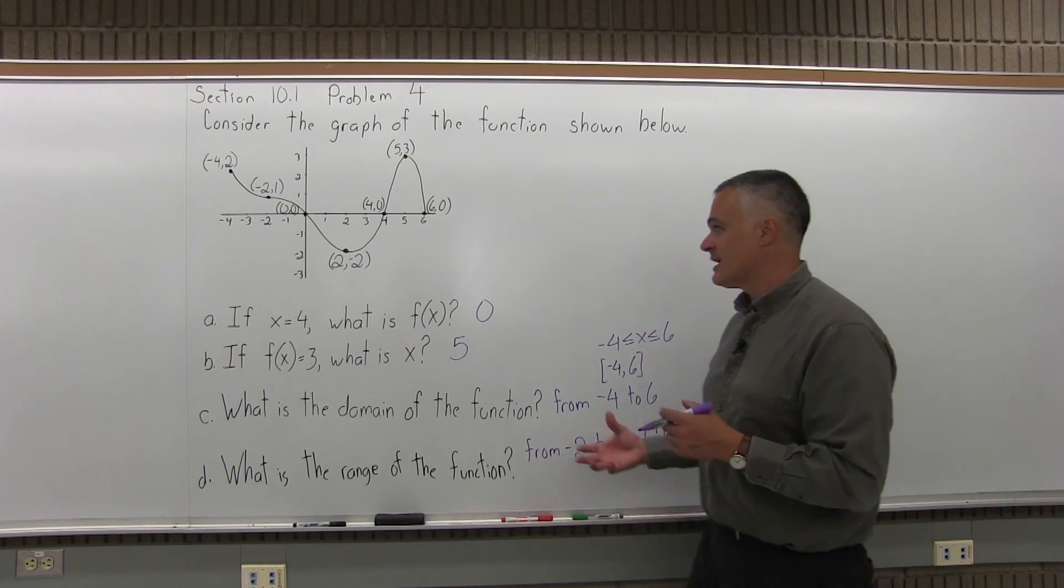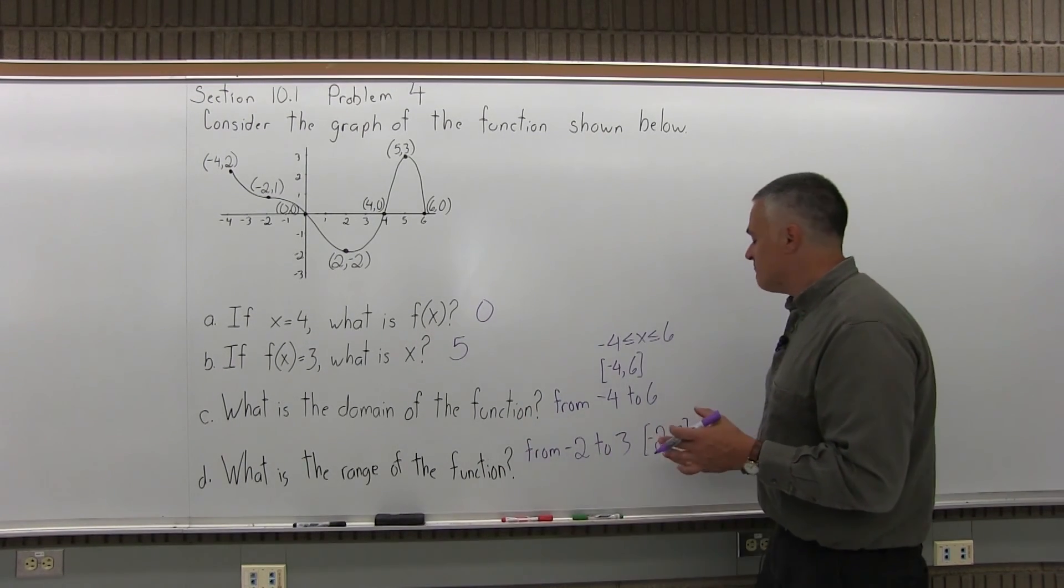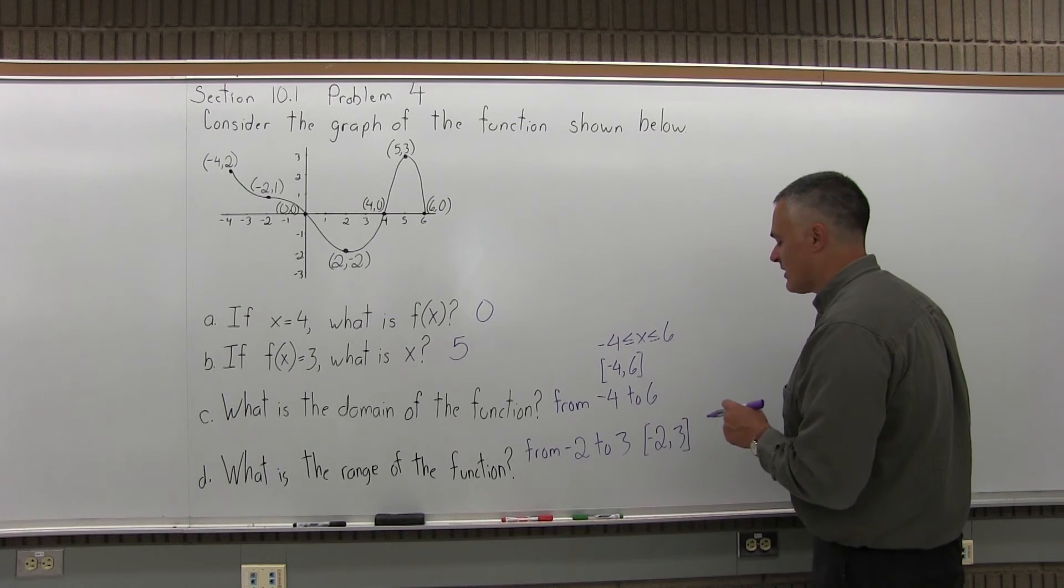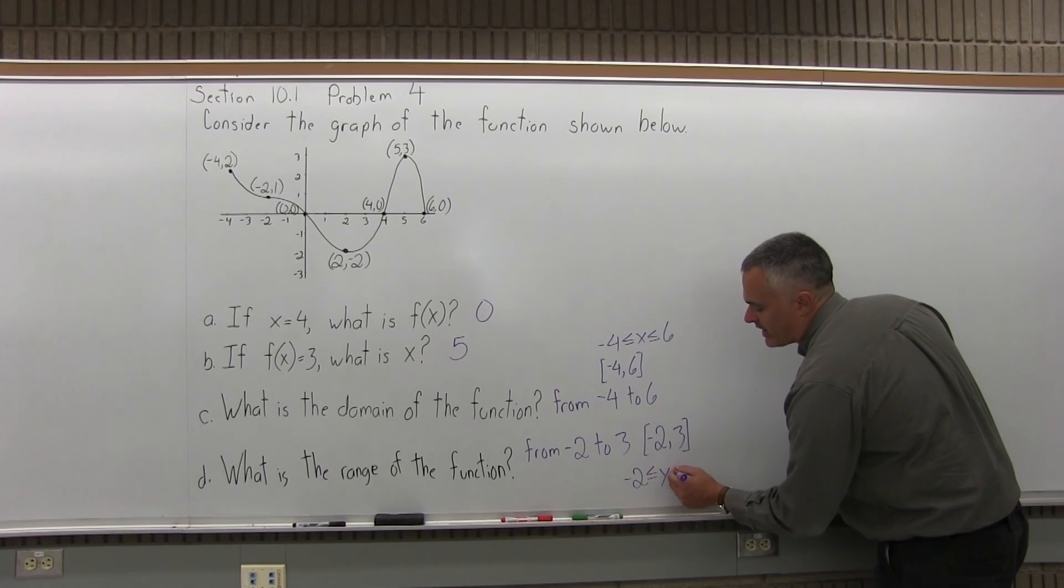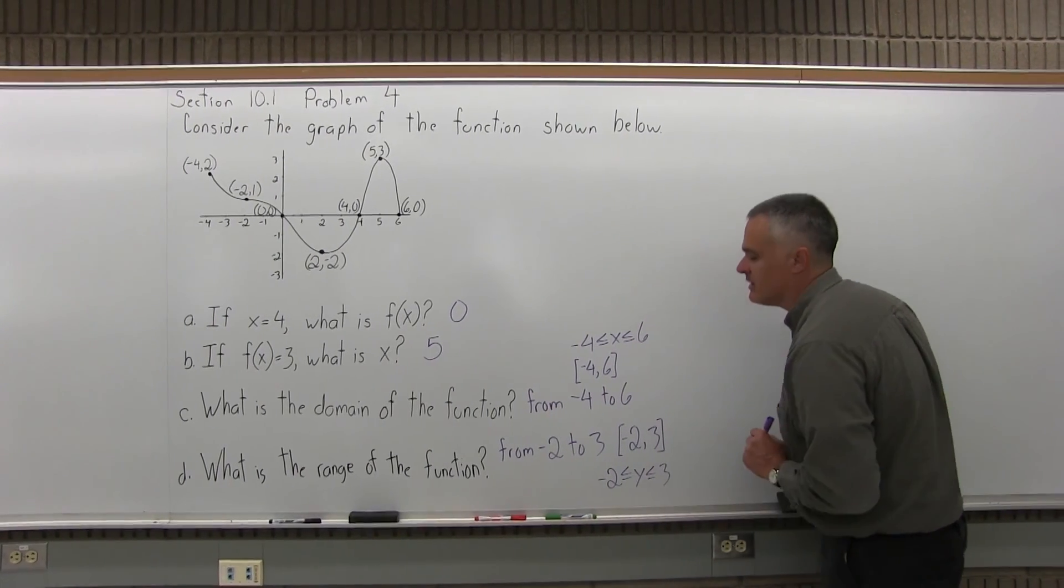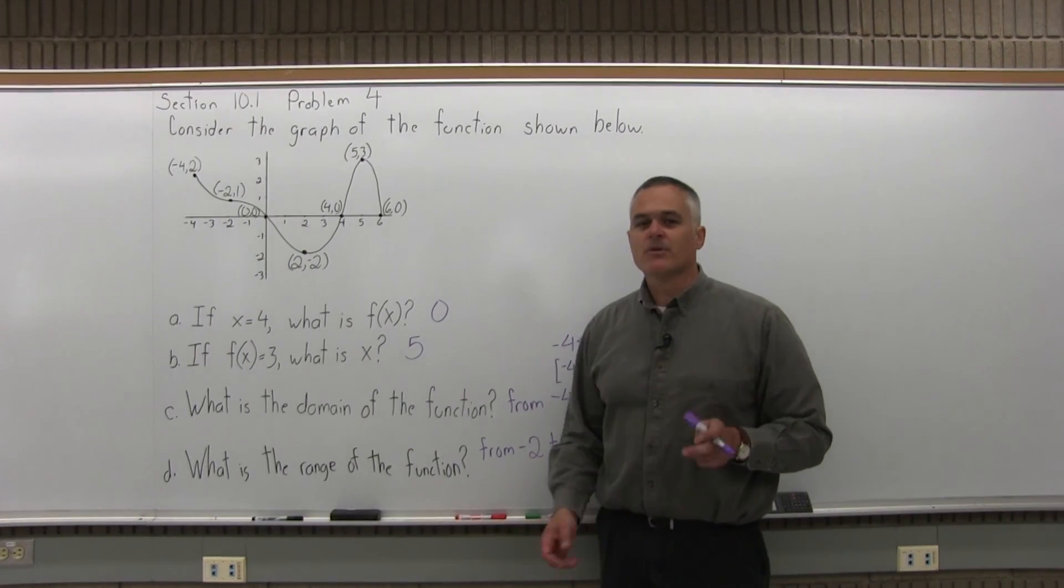If you're familiar with the notation, it's actually less writing, though you've probably seen it in a previous class. You may have forgotten it. And you could also write something like negative 2 is less than or equal to y is less than or equal to positive 3. I would be happy with any of those forms.